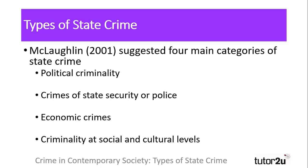Firstly, political criminality — fraud, corruption and censorship as examples. Secondly, crimes committed by the security forces: the police, military and other associated forces, with examples including torture, police brutality and injury or death to those in custody. Thirdly, economic crimes, increasingly linked with state corporate crime in the era of neoliberal economics and privatisation. And the final form: social and cultural crime, examples of which are discrimination, segregation and the denial of basic freedoms offered by the Universal Declaration of Human Rights.